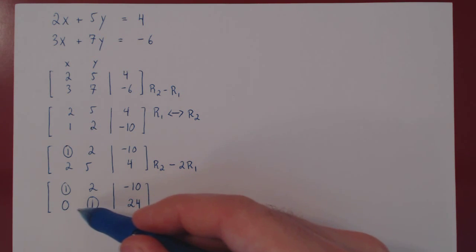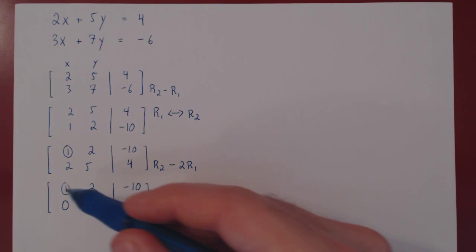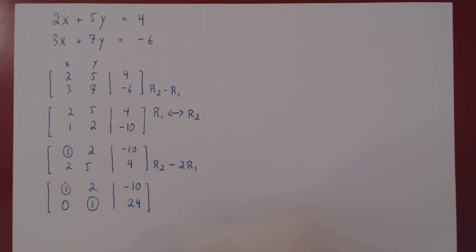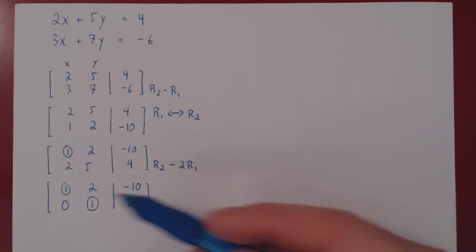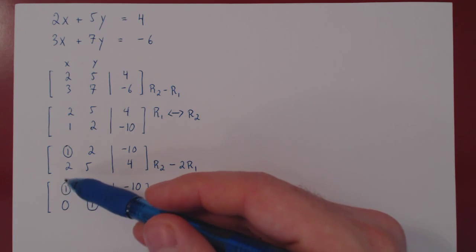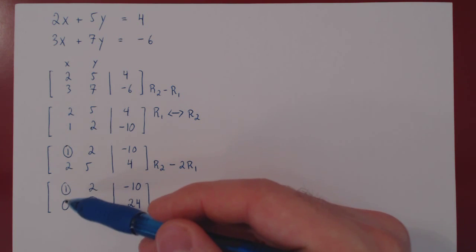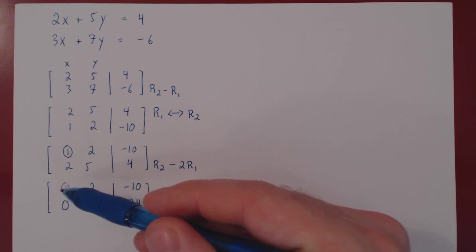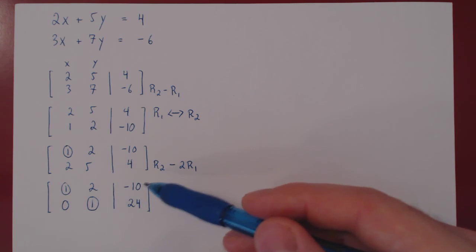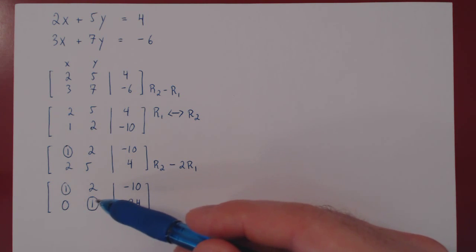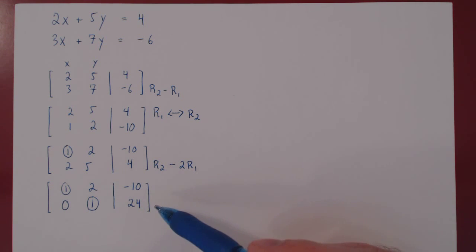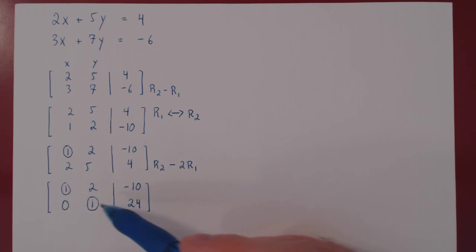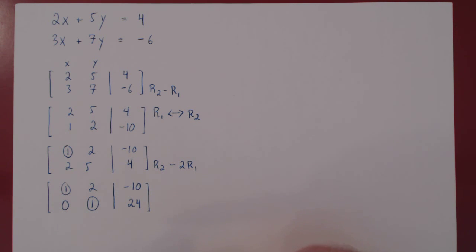And now we have reached the bottom row and we have our two leading ones. This is the end of what's called Gaussian elimination. You introduce the leading one in the top row, kill the entries below, ignore the first row, and keep going until your next leading one, until you reach the bottom row. We have reached the bottom row and we have our second leading one.